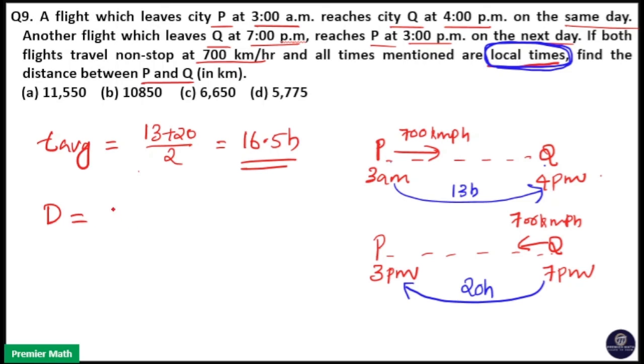So, we need to find out the distance is equal to speed into time. So, it is equal to 700 km per hour into 16.5 hours. That is 7 into 5, 35. 7 into 6, 42 plus 3, 45. 7 into 1, 7, 7 plus 4, 11. This 0 cancelled this point. So, 0 will come here. So, your answer is option A.